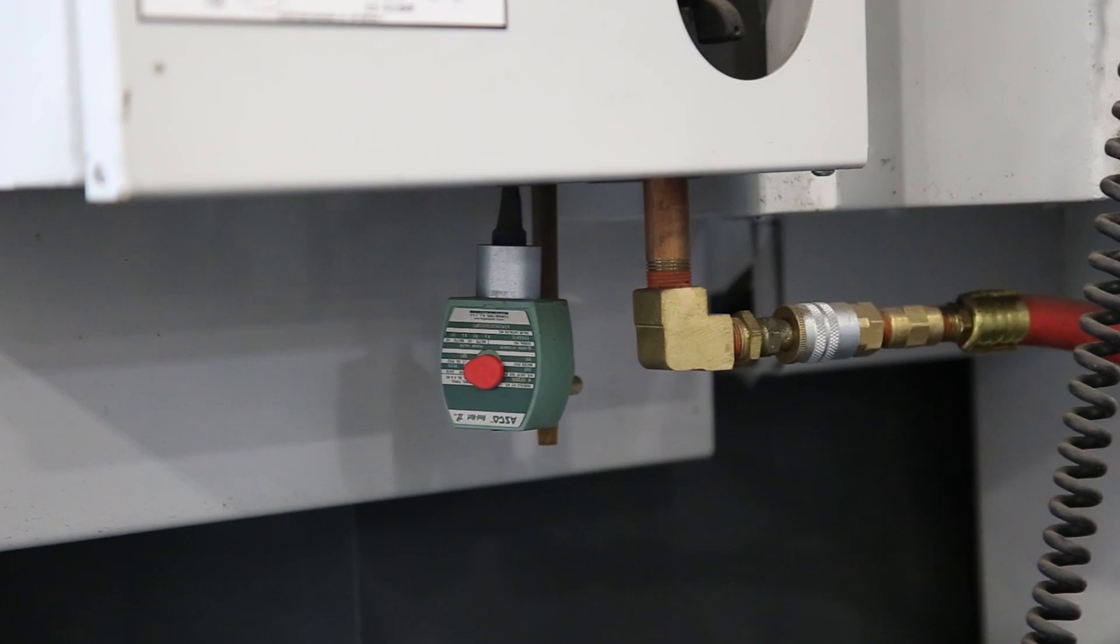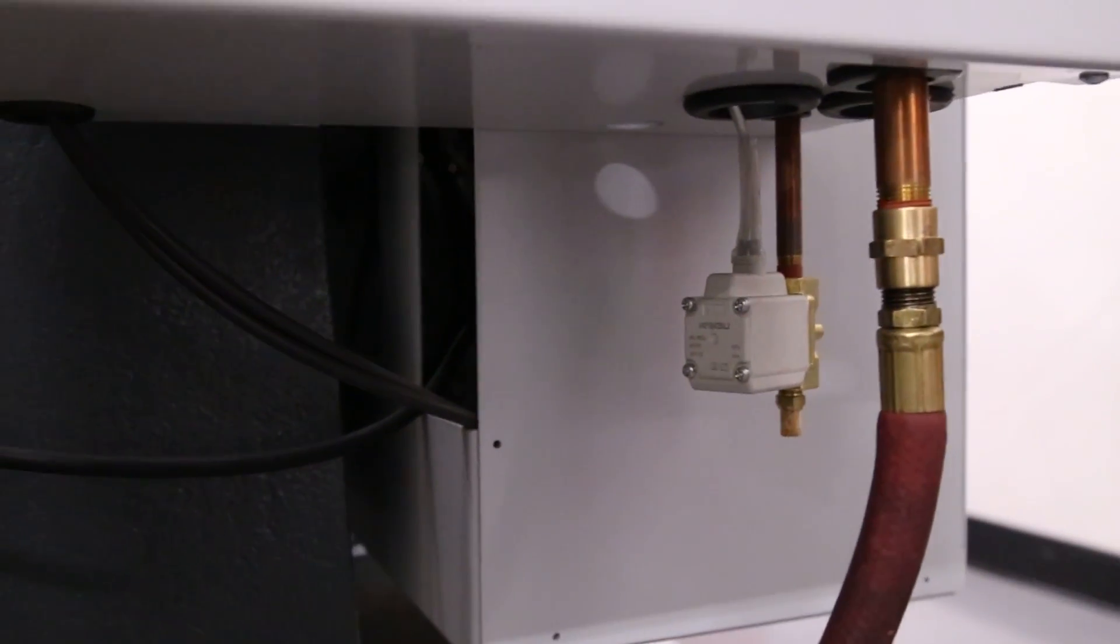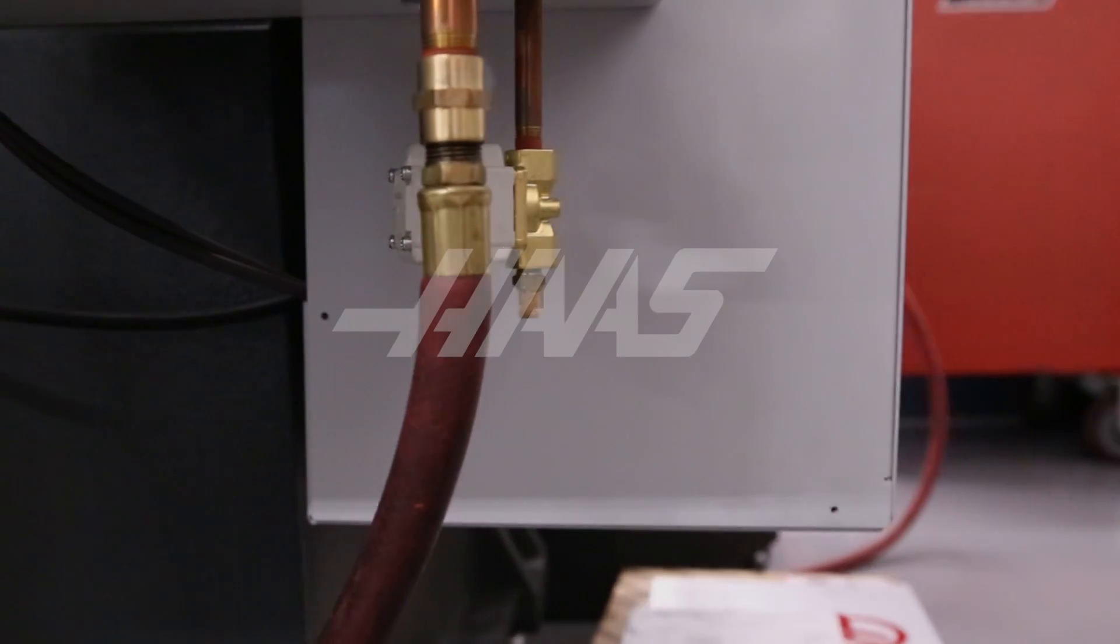Reinstall the solenoid under the machine and you're good to go. If your solenoid isn't an ASCO or SMC brand or if you need further help with your air purge system, contact your local Haas factory outlet for assistance.